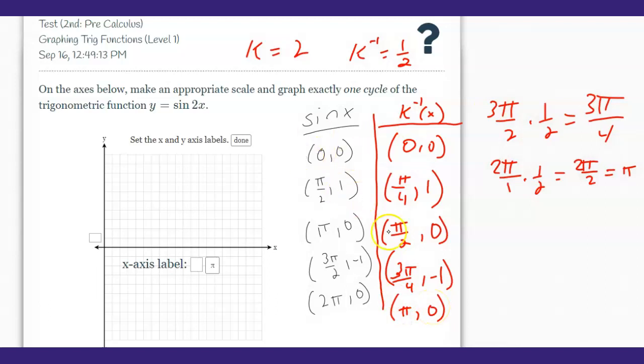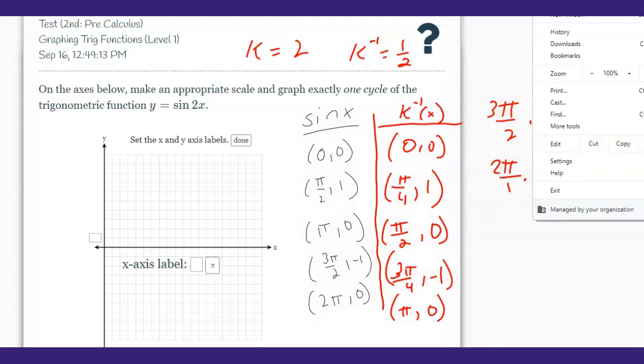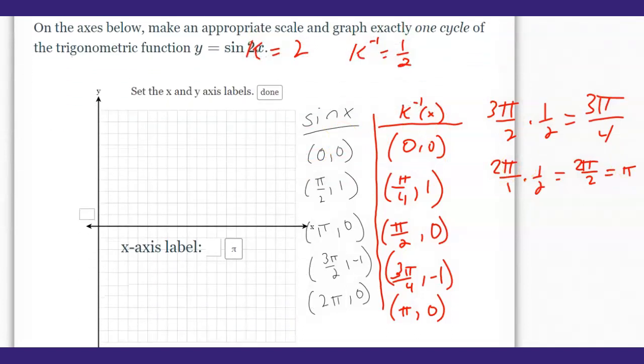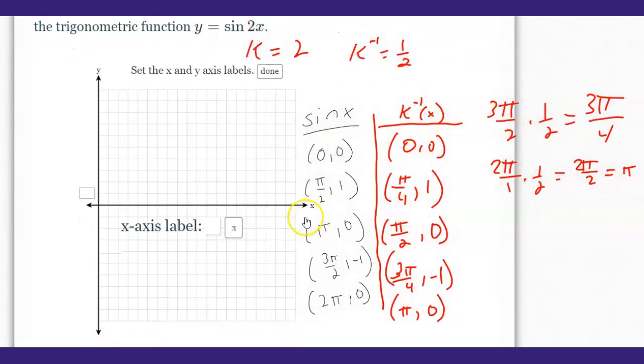So the question was how do I put this in? Well, look at our scale right here. Our ending value is pi, so we're going to break it down into fourths. Let me zoom in for you. For the x label, we'll put it in fourths.